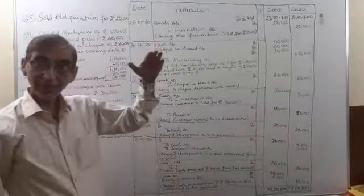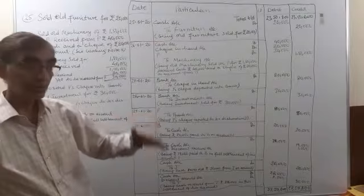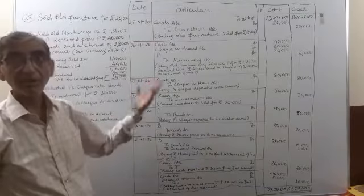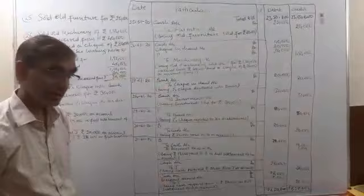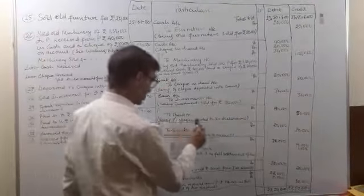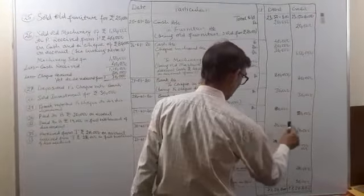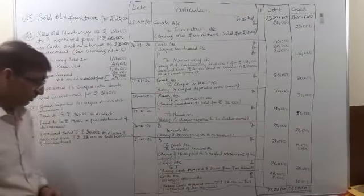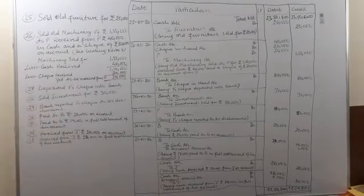Since the bank account had been debited when the cheque was deposited, that debit balance is now to be reversed, so bank account will be credited. Narration: being P's cheque reported to be dishonored.